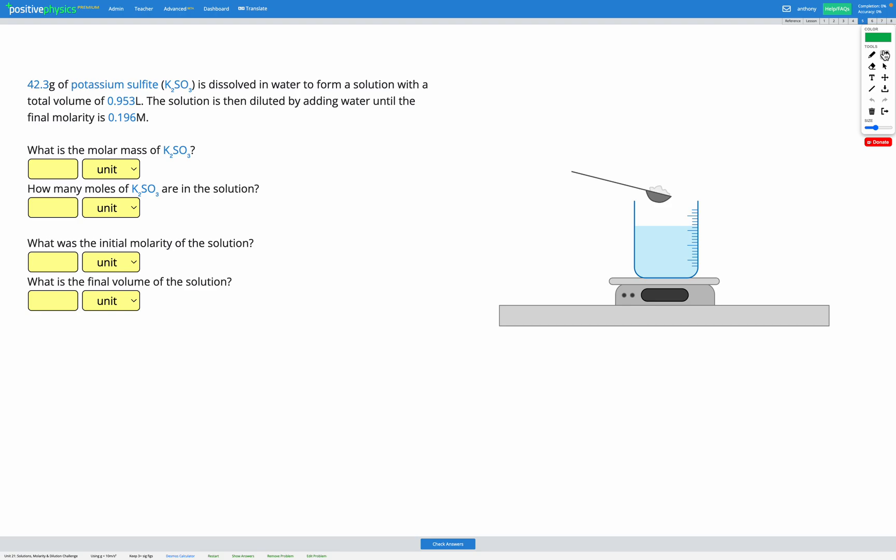We're going to go through one of these example questions, but for these you will have to do some problem solving to figure out what equation you need to use and where to get your final answer. In this particular question, we have 42.3 grams of potassium sulfite, K2SO3, dissolved in water to form a solution with a total volume of 0.953 liters. Then the solution is diluted by adding water until the final molarity is 0.196M.